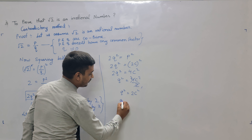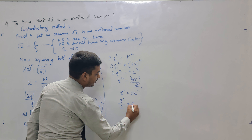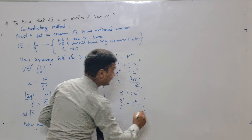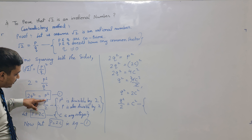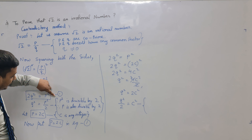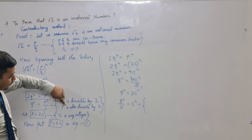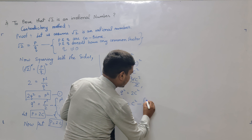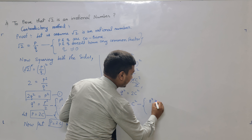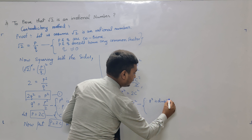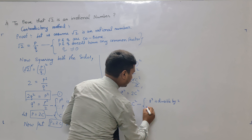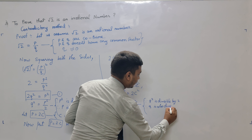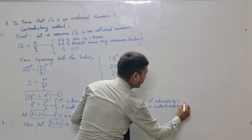After substituting P equal to 2C into equation 1, we get Q square divided by 2 is equal to C square. Observing the same pattern — Q square is divisible by 2, therefore Q is also divisible by 2.